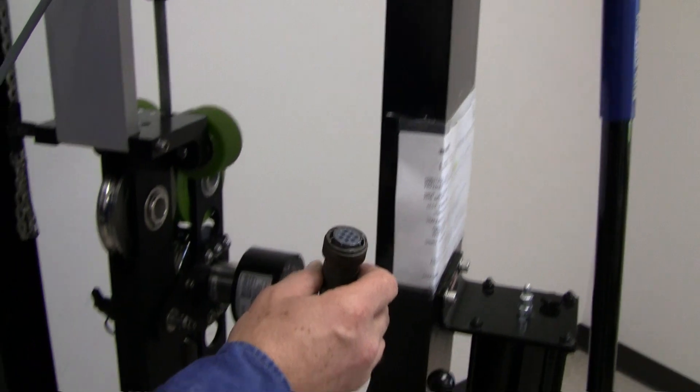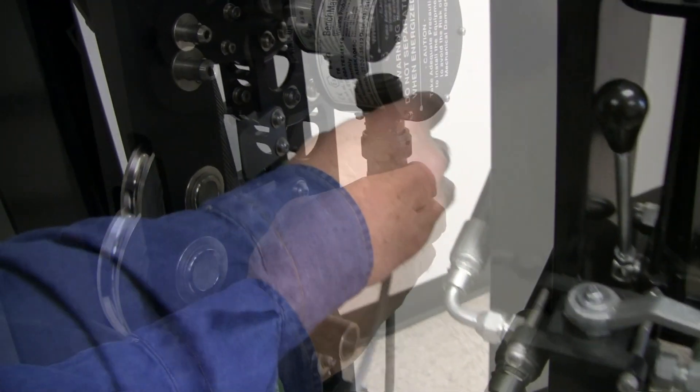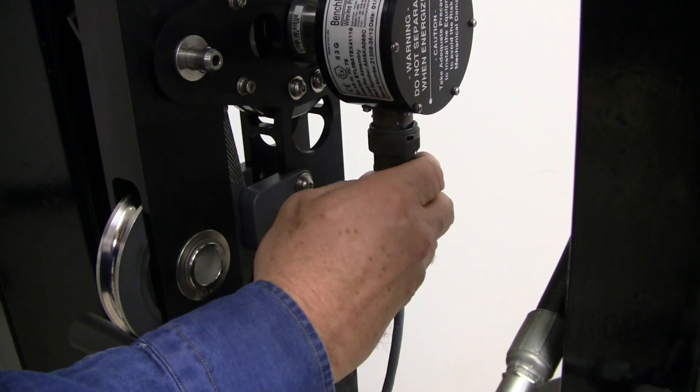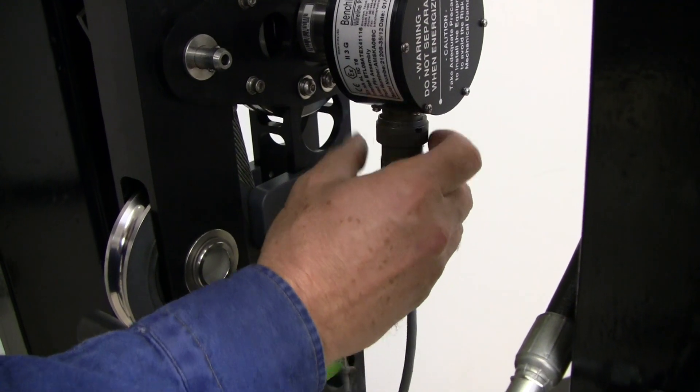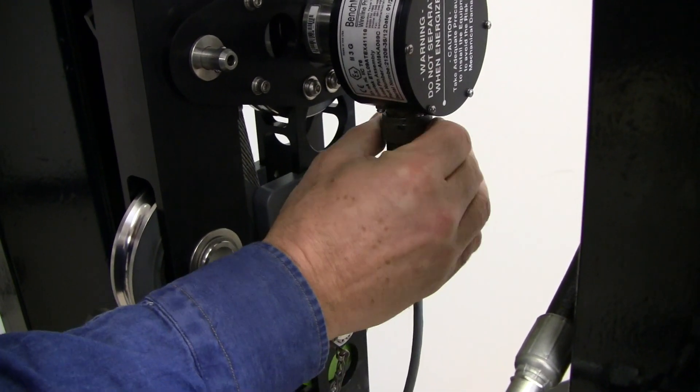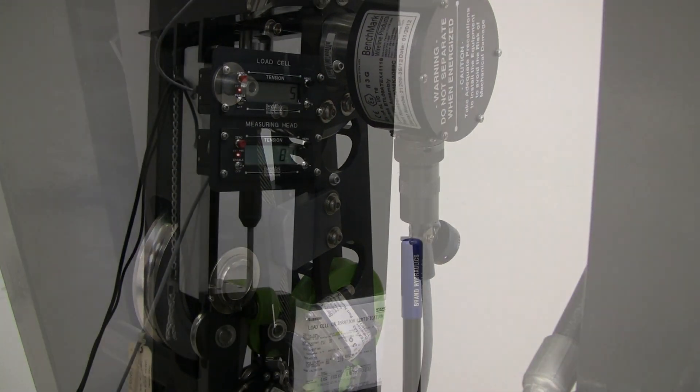Make sure that the cable from the load cell on top of the test stand is connected to the top tension panel display. Then connect the other tension panel to the load pin being tested as shown in the video.